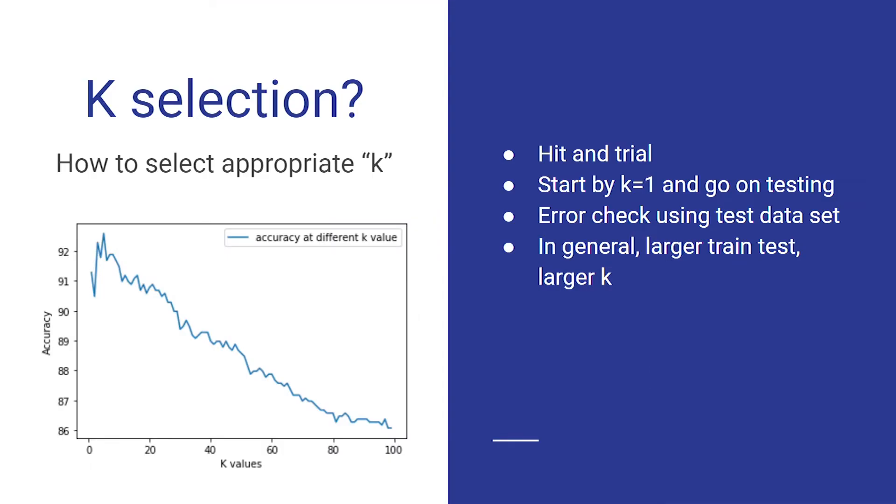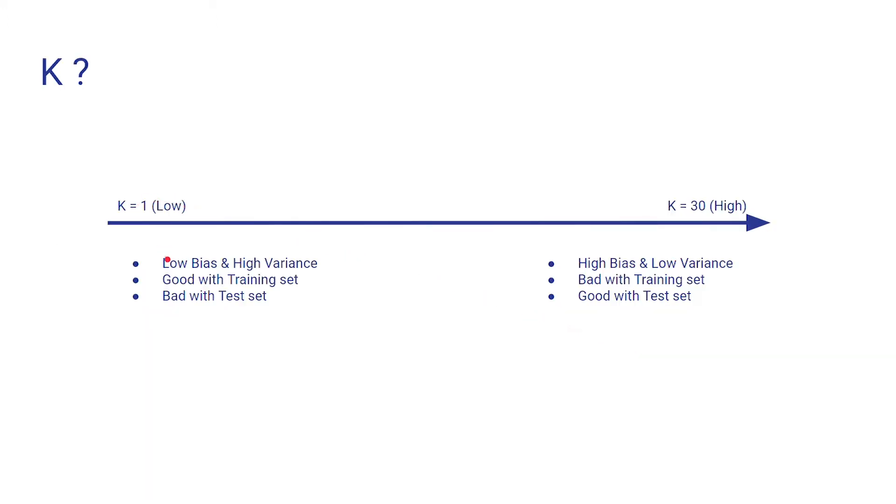Obviously, one big question is how can we select the value of K? There is no hard and fast rule. We usually start with K equals 1 and continue testing at a higher value of K. When we use lower value of K, the model is low biased and high in variance, which means it does good with training set but not good with test set. Similarly, if we use a higher value of K, our model will be highly biased and low in variance, which means it is not so good with the train set but better with the test set.